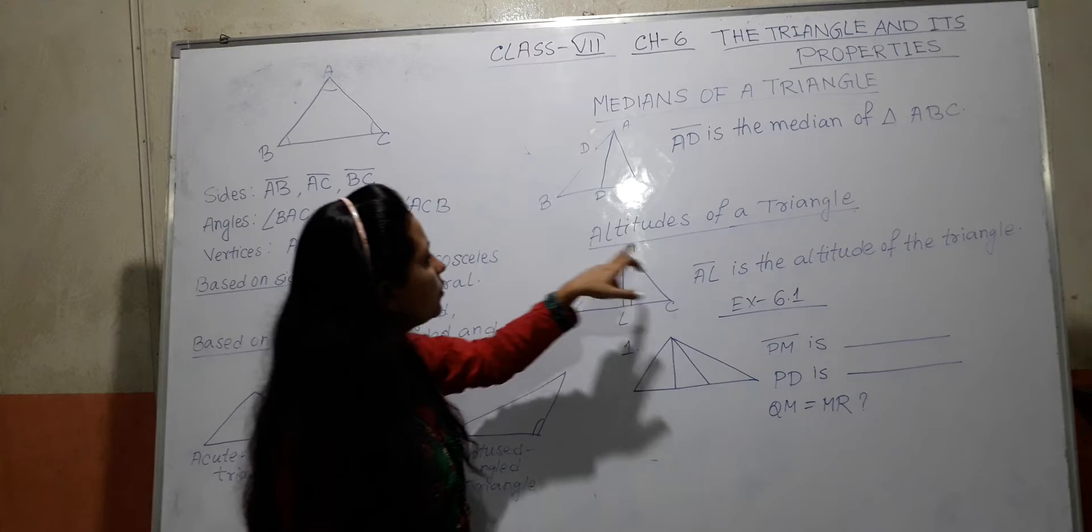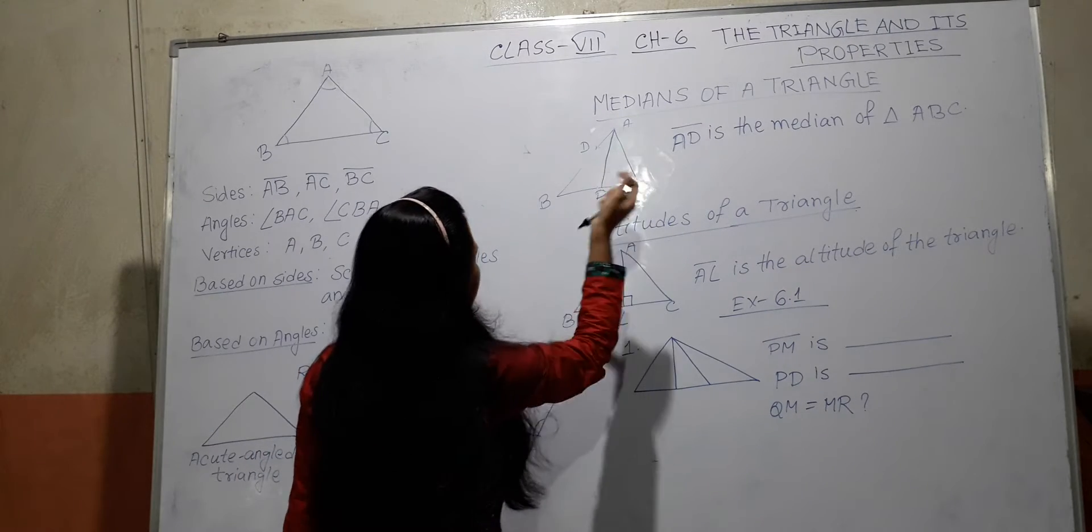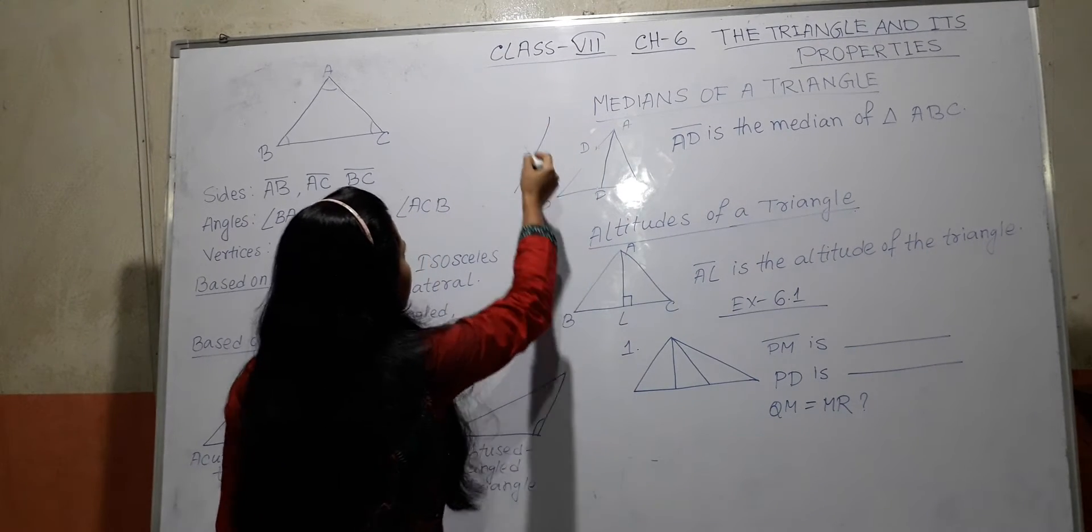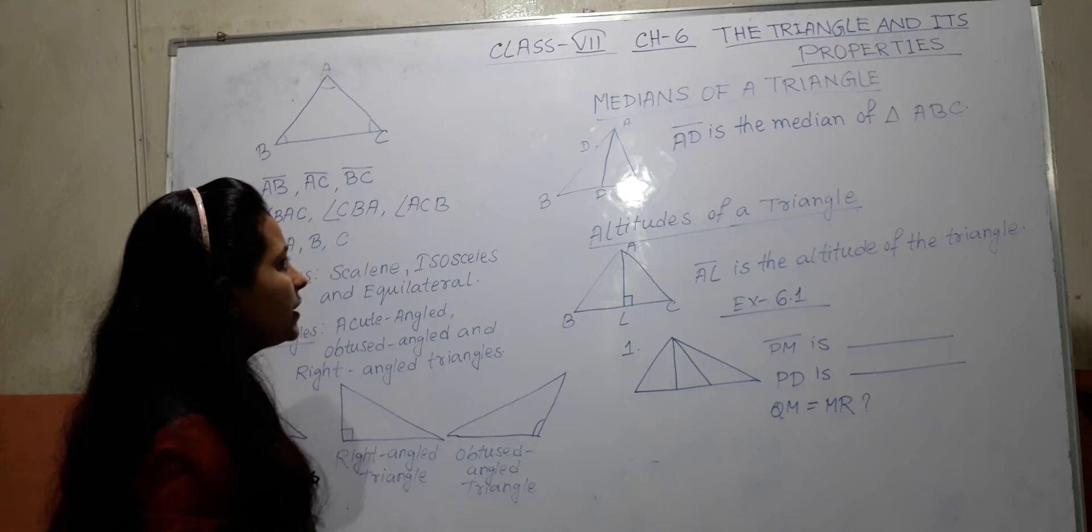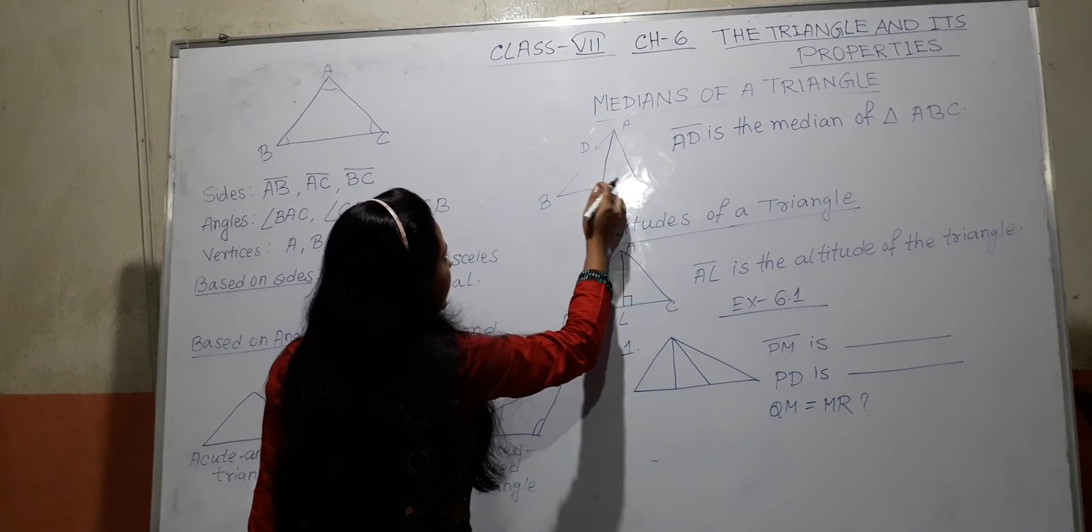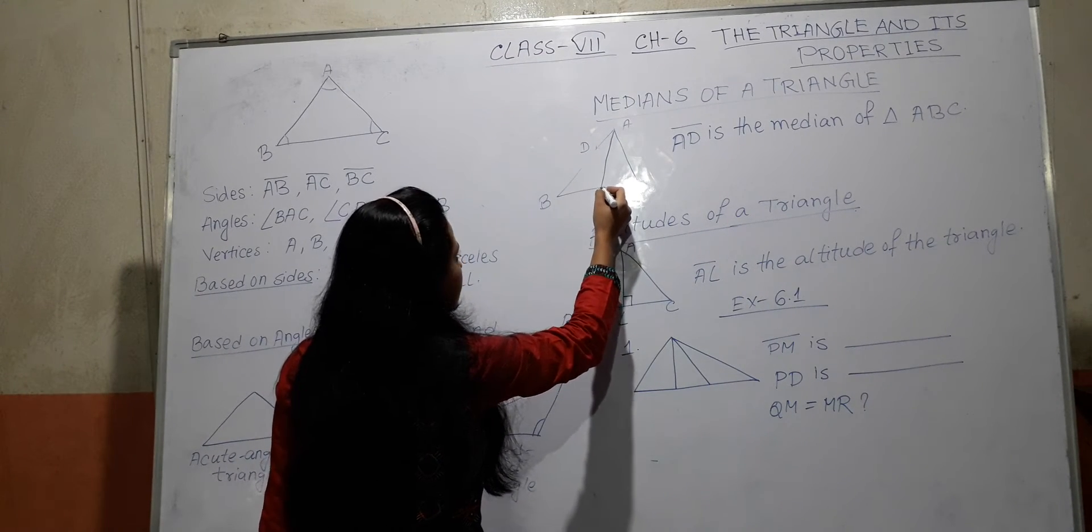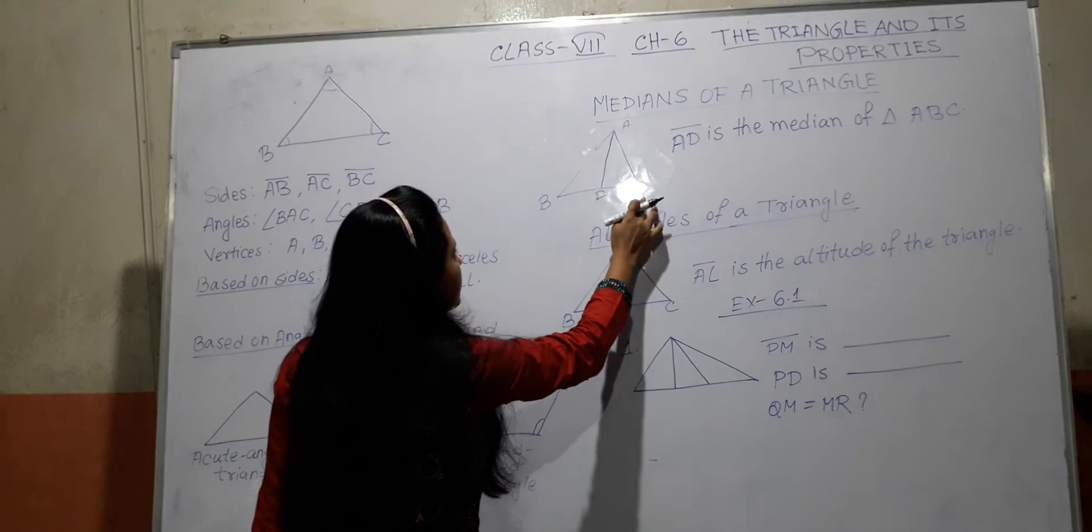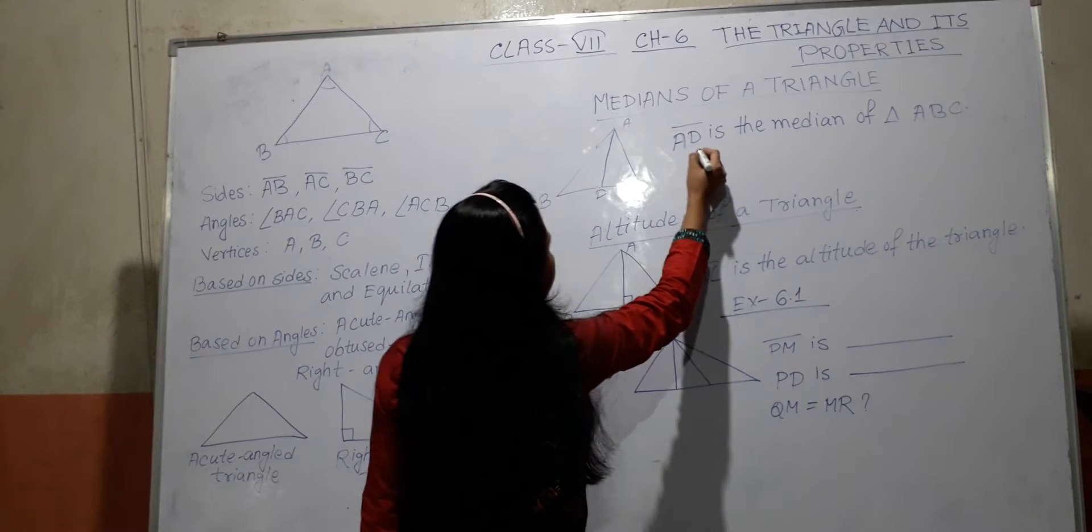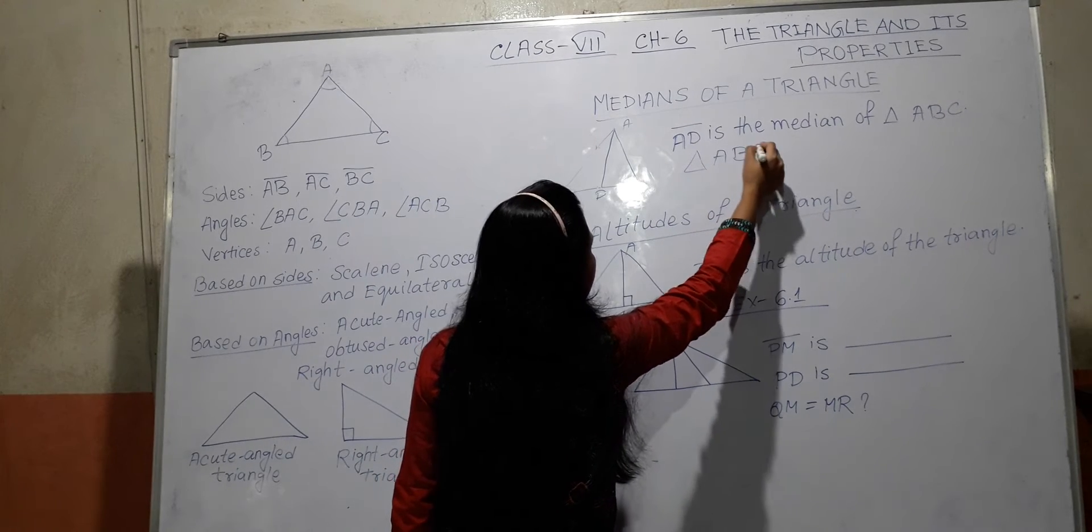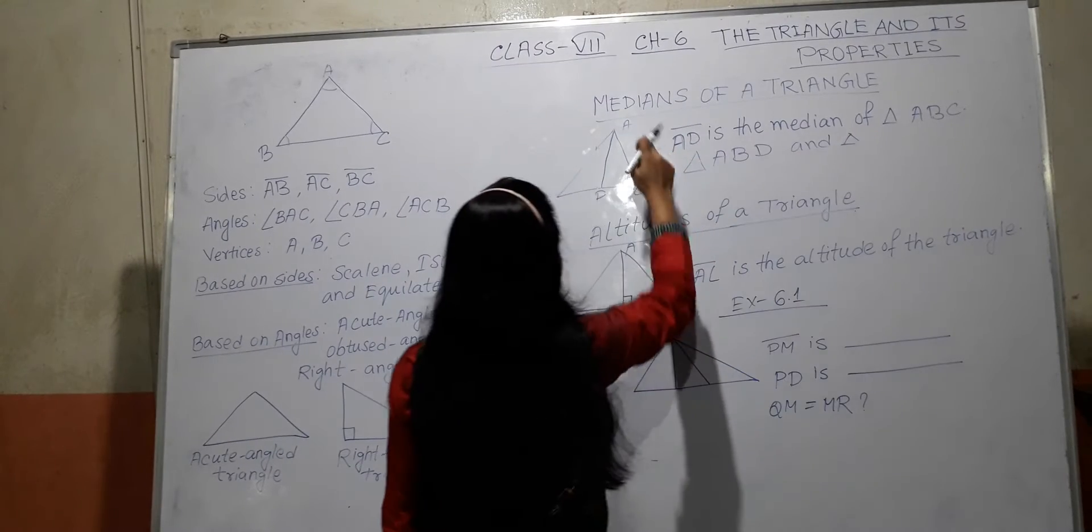Next, altitude of a triangle. Median should be like this type. This type means in a triangle there are three medians. See, this median AD divides the triangle in part ABD and ACD. AD is the median, which divides the triangle ABD and triangle ACD.